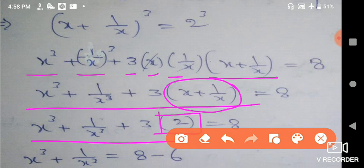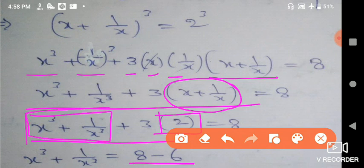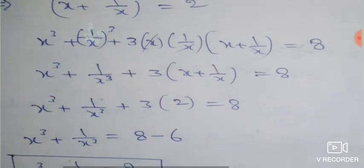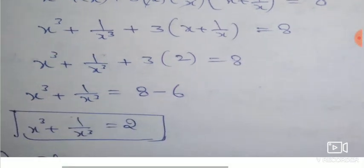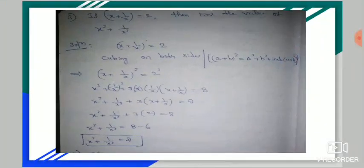So x³ + 1/x³ is equal to 8 minus 6, that is equal to 2. That's the answer. Very simply we got the answer. This is easy — we can get the answer this way. Practice this method. This is one problem — practice it and then I will give you another problem.